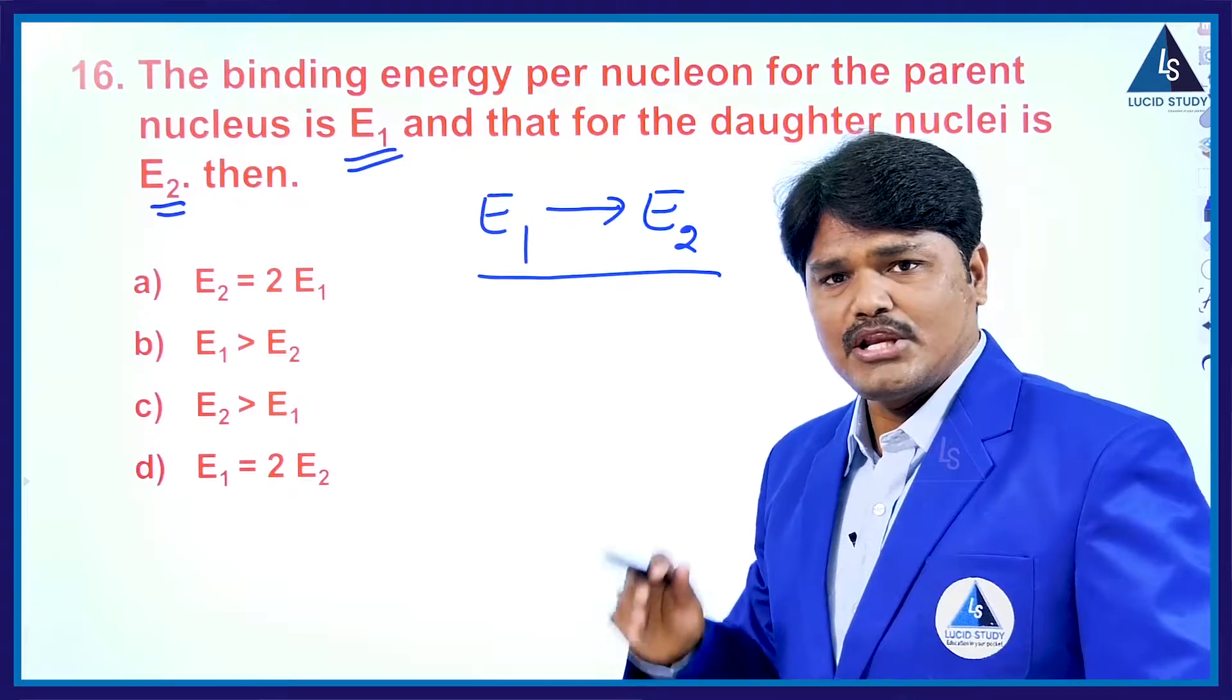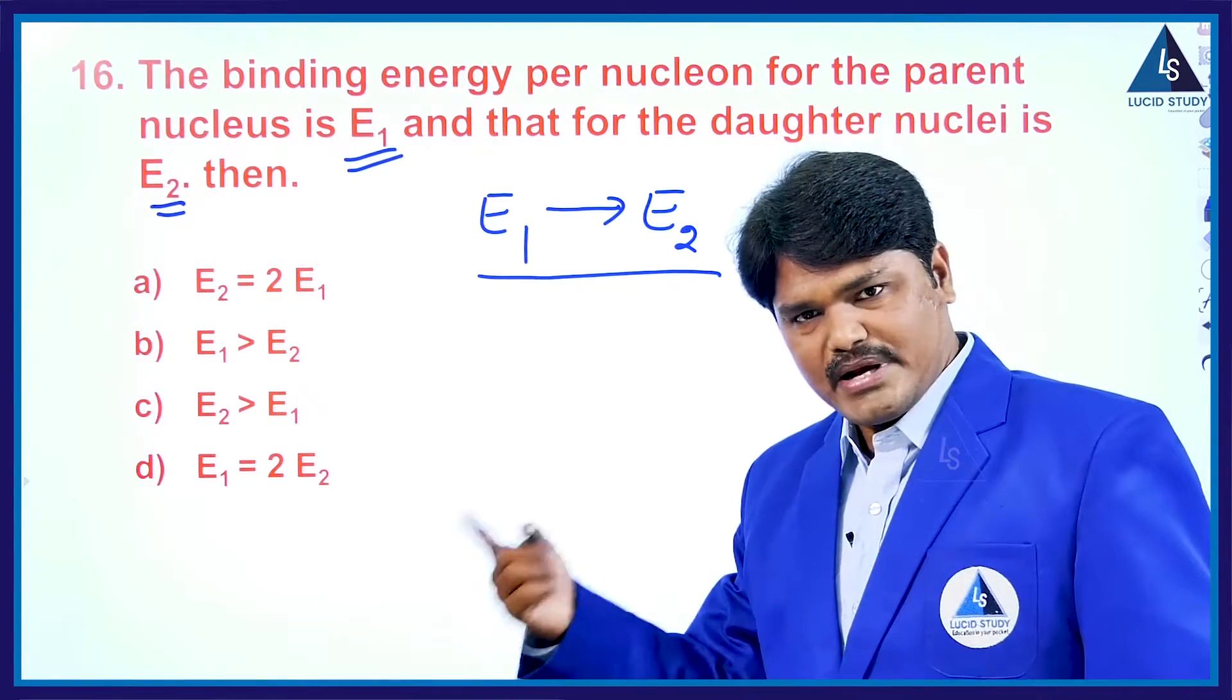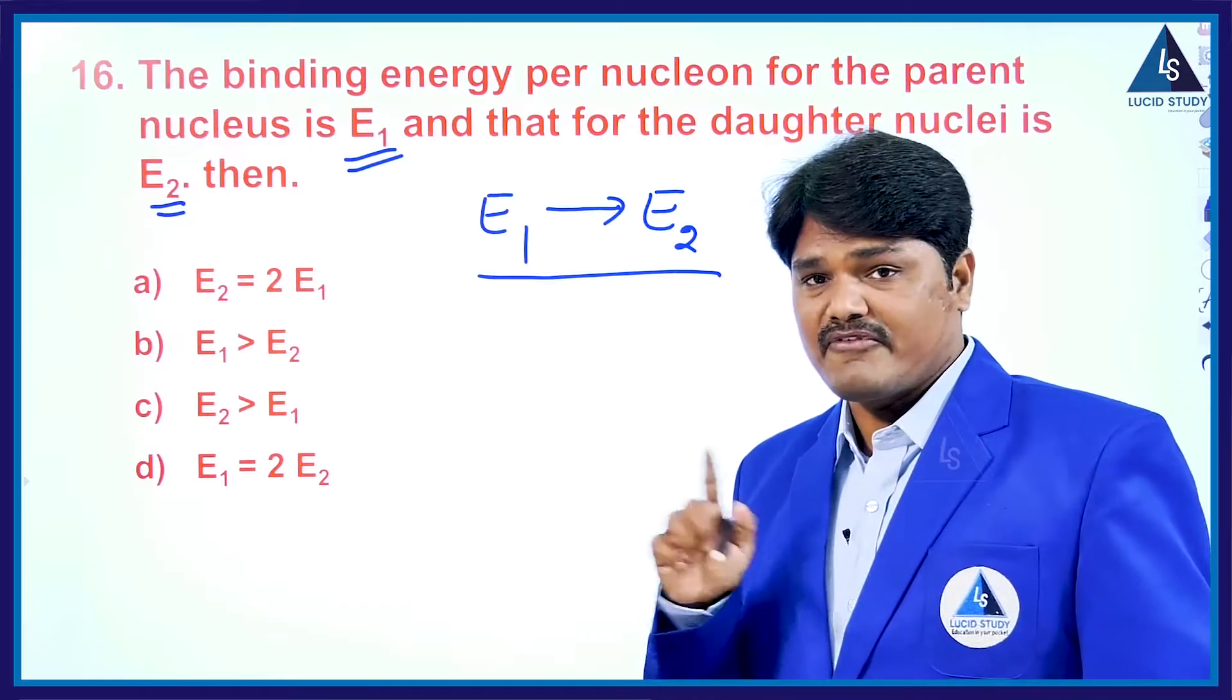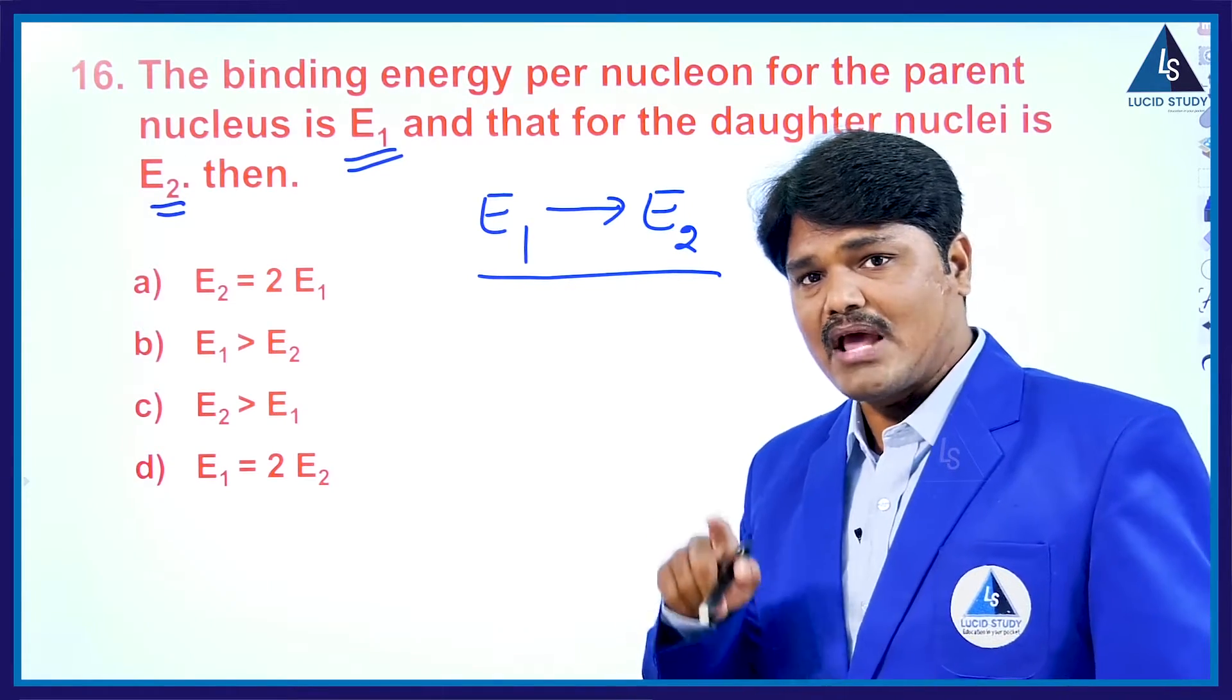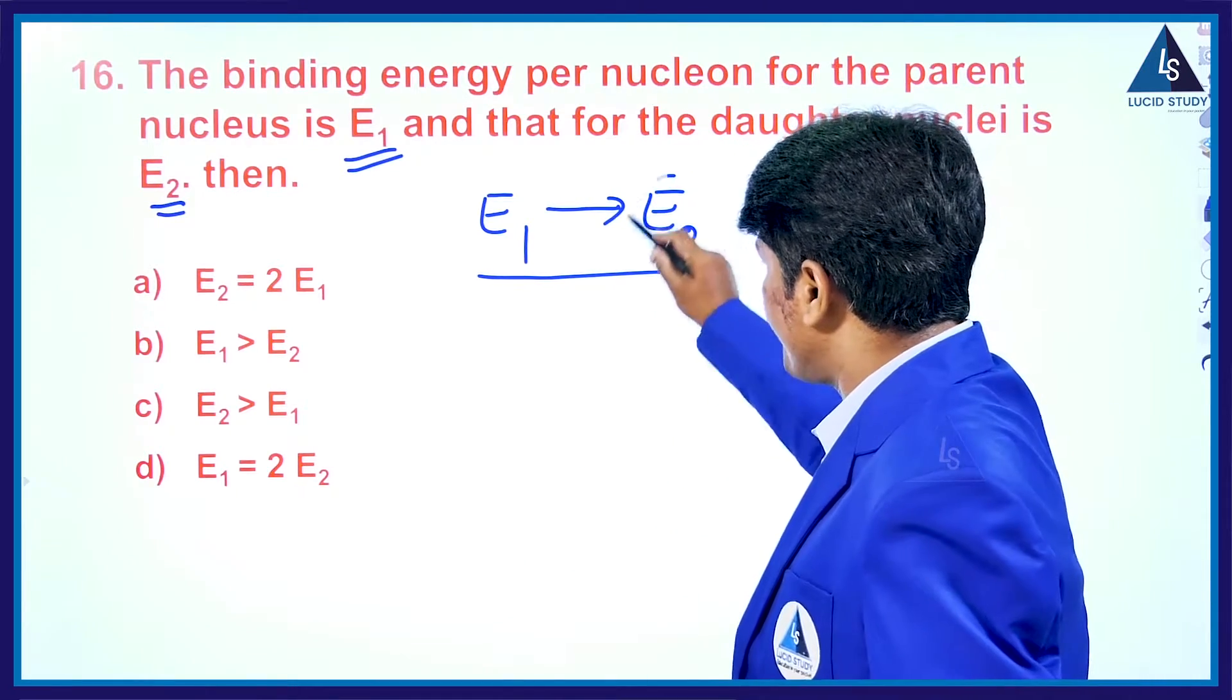When the nucleus splits, if it is an unstable nucleus, then it splits. After splitting, the daughter nuclei have more stability. Whenever daughter nuclei have more stability, they have more energy.